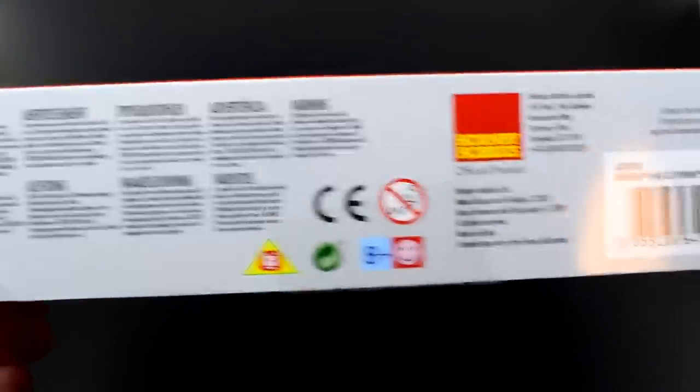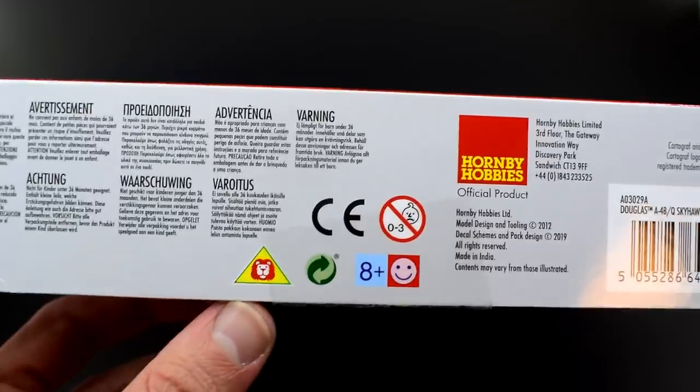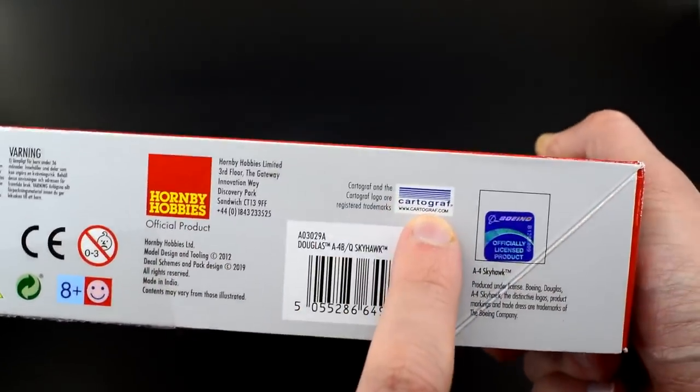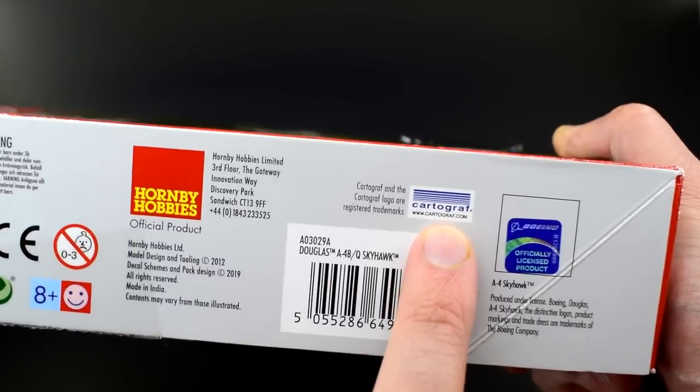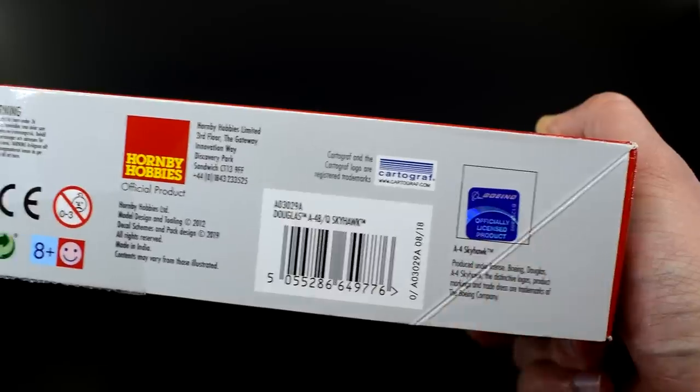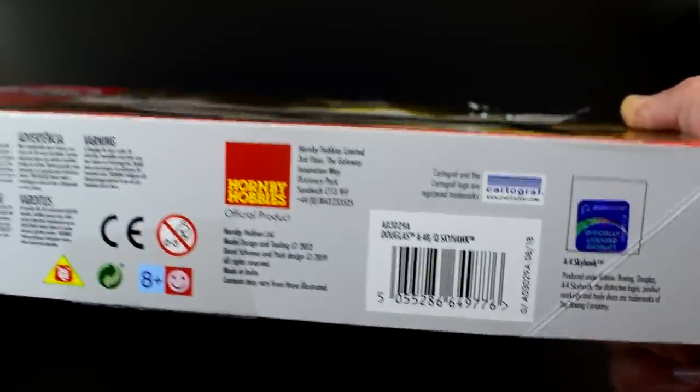The other side of the box has some warnings, other symbols for various things, contact address for Hornby, a Cartograph logo so the decals are going to be really good, and a nice little sticker which tells us it's an officially licensed product from Boeing. The short edges feature the same image and information as on the front. So let's get into this box.